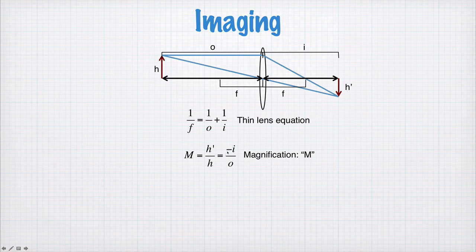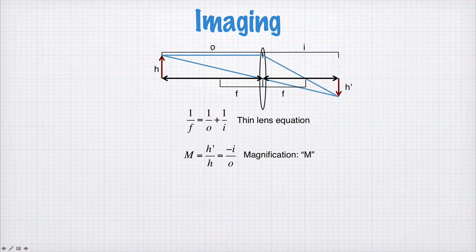The magnification is also given by negative I on O. So, the image distance is positive when it's on this side of the lens, and the object distance is positive on this side of the lens. So negative I on O will be a negative number. We'll meet situations where the image is virtual, in which case the image is on the same side as the lens as the object. In that case, the image distance is said to be negative, and the negative signs will cancel out.